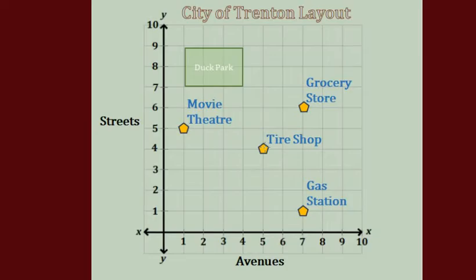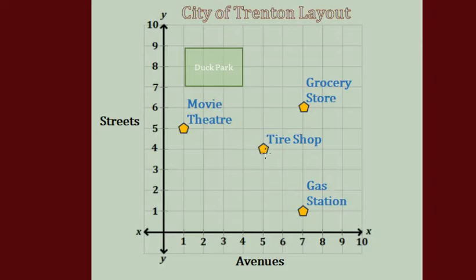I've got a few options here. The gas station is going to be only one block from the edge of town. Looks like the movie theater is one block from the edge too. The grocery store is three blocks from the edge of town, so it's not going to be that one. So it's going to be the movie theater and the gas station. Are there any stores that are on the same street or avenue? Looks like the gas station and the grocery store are on the same street right there — they're on 7th Avenue.